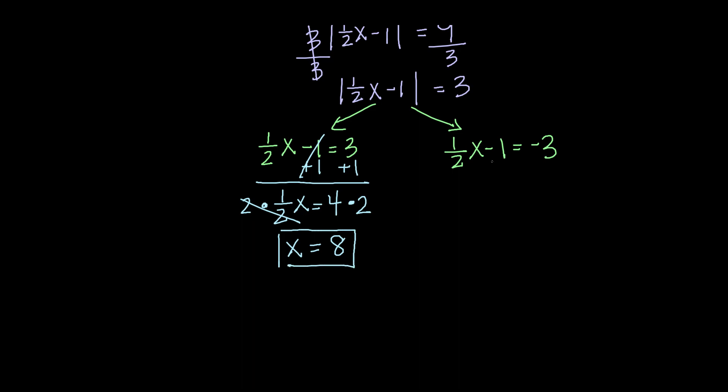Following a similar procedure on the second one, I will add 1 to both sides. That leaves me with 1 half x equals negative 3 plus 1 is negative 2.